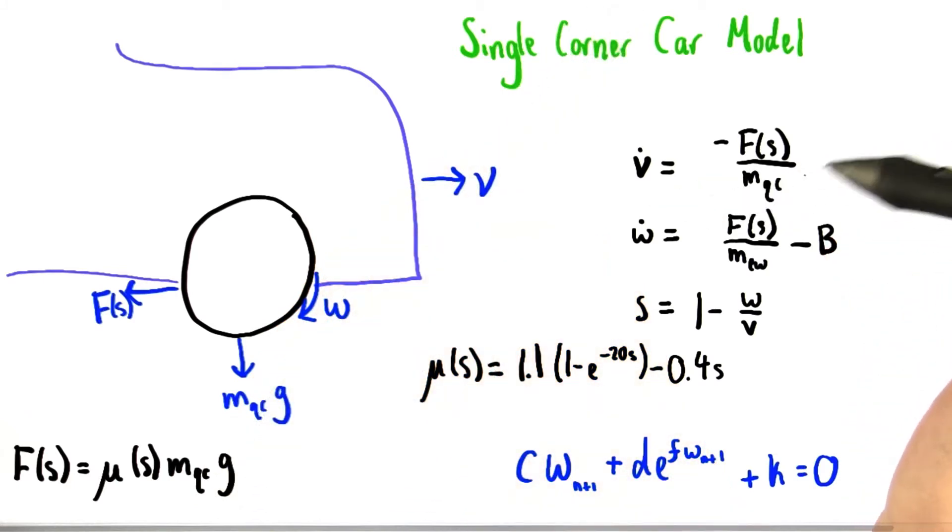We can relate some other important quantities to the force of friction. From right here, we can see that V dot, or the acceleration of the car, is impacted negatively by the force of friction. Change in the velocity of the wheel depends both on the force of friction and on B, which is the braking acceleration. S here, as you'll remember, stands for wheel slip.